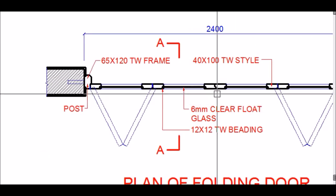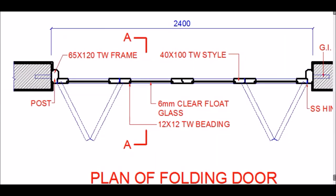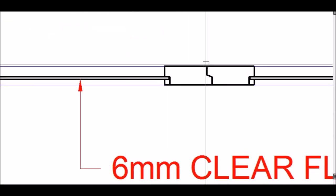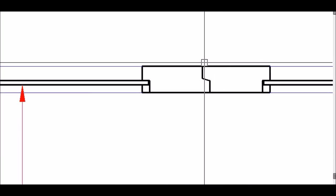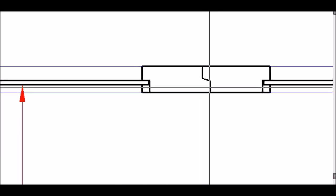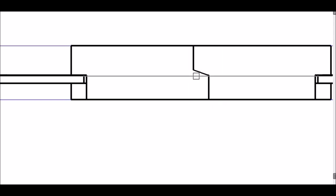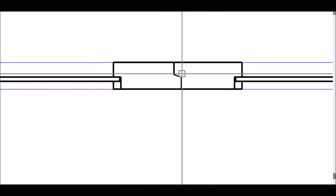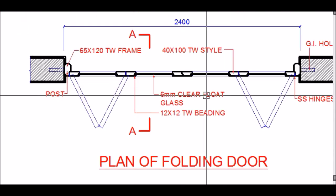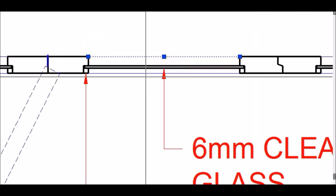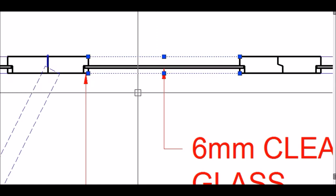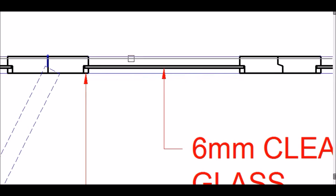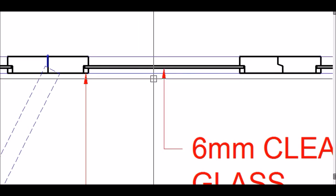Since two shutters open in each direction, in the center of the door there is a notch approximately 12mm wide. The blue lines visible in the elevation indicate the rails of the shutter.